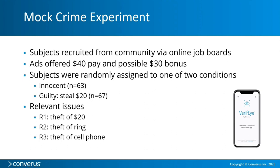Those who were innocent stole nothing. Those who were guilty stole $20, and everybody was asked about three different thefts: a theft of a ring, a theft of a cell phone, and the theft of the $20 for which the guilty were programmed. No one stole a ring, no one stole a cell phone, and the innocent people didn't steal anything.